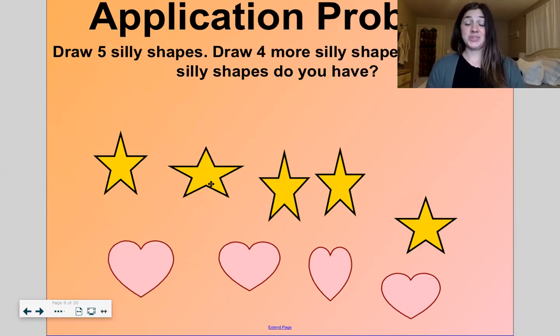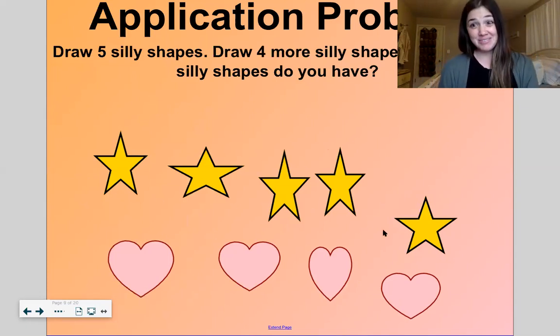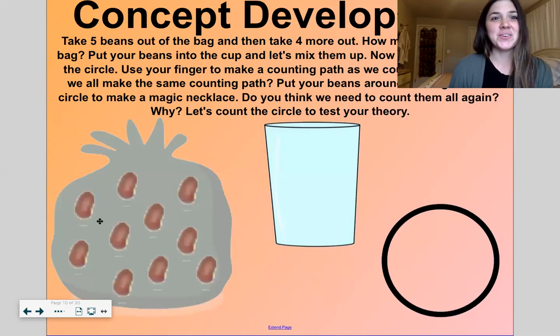Now how many shapes do we have all together? One, two, three, four, five, six, seven, eight, nine. We have nine shapes all together. Five, count on, six, seven, eight, nine.